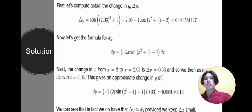Solution. First, let's compute the actual change in y. Δy equals cos(2.03² + 1) - 2.03